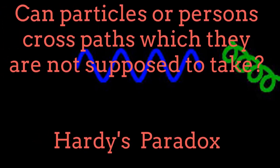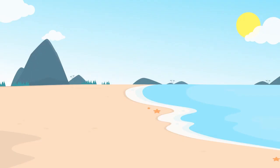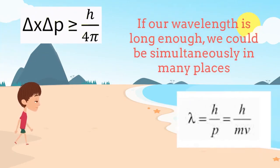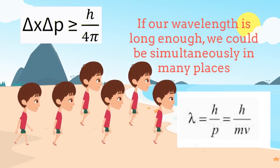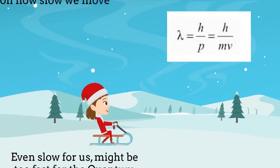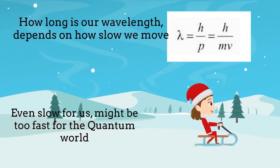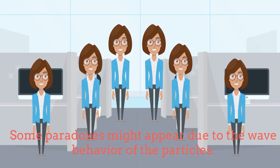Can particles or persons take paths which they are not supposed to cross? The Hardest Paradox, let's enjoy it! Any object or organism is both wave and particle. As humans, if our wavelength is long enough, we could certainly appear simultaneously in different places because we would behave as a wave rather than as a wave-located particle. How long our wavelength is depends on our momentum. The momentum is the product between our mass and our velocity. In this way, some paradoxes appear when particles or organisms show a wave character behavior.